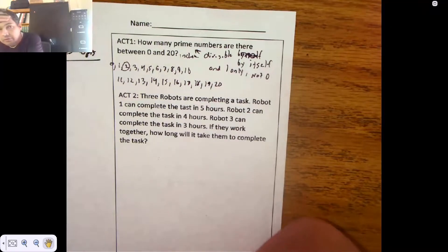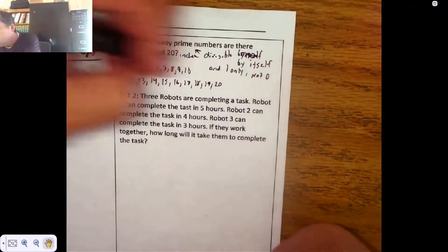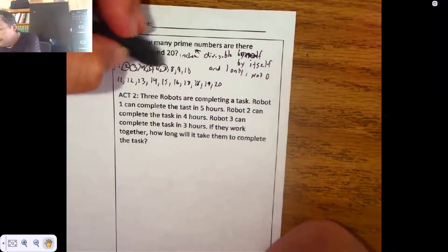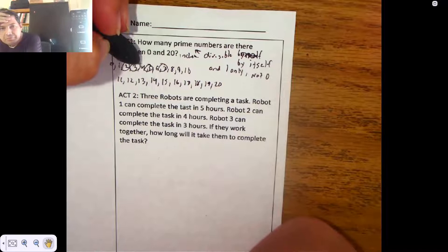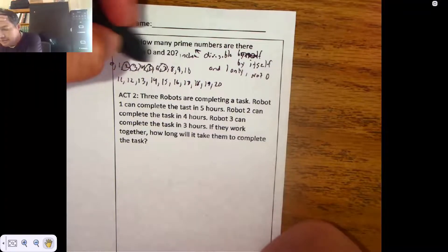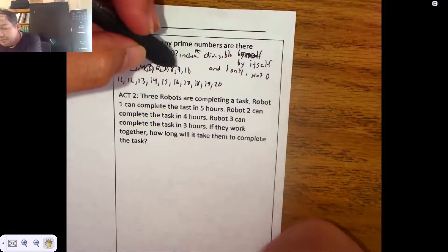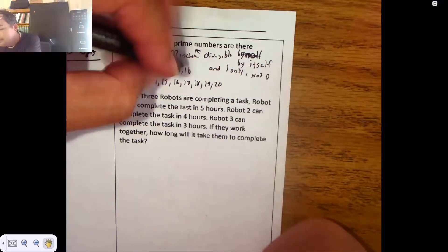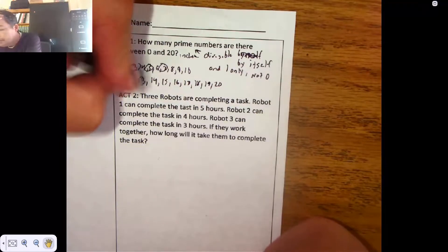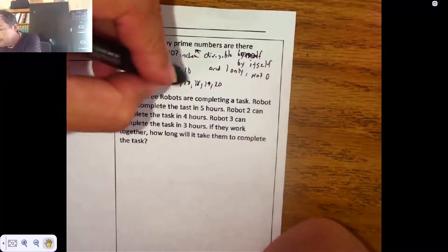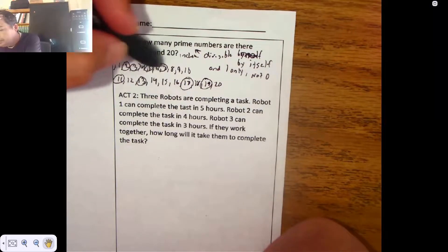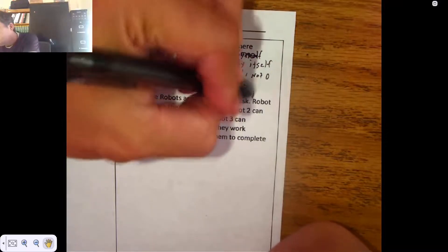Two is divisible by itself and one only. Oh, yeah. Three, five, seven. I skipped over four because four is divisible by two. I'm skipping over six because six is divisible by three. I'm skipping over eight because eight is divisible by two. I'm skipping over nine because nine is divisible by three. Ten is divisible by five. All right, 11, 13, 17, 19. There are one, two, three, four, five, six, seven, eight. Eight primes.